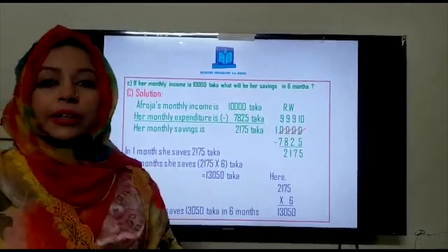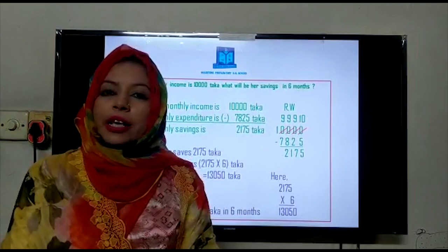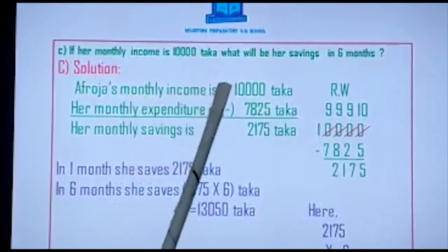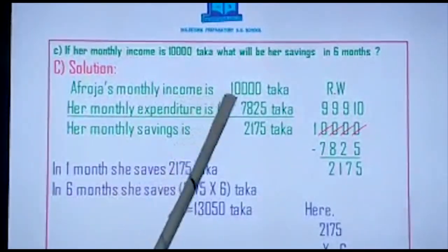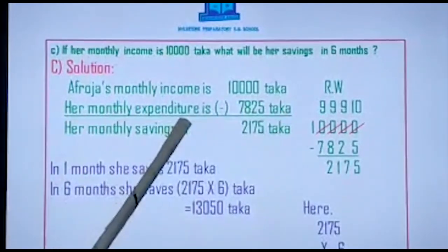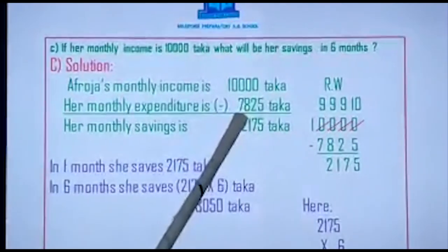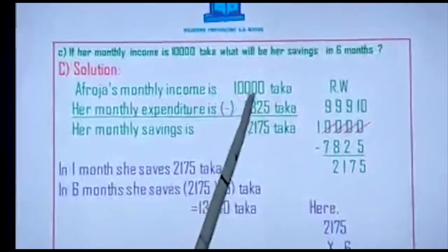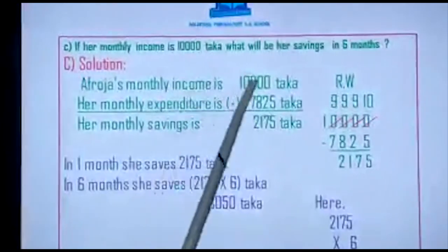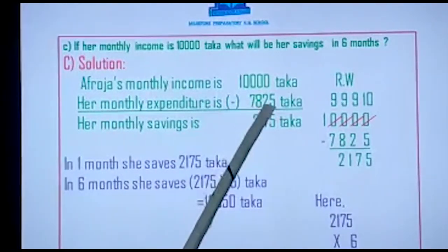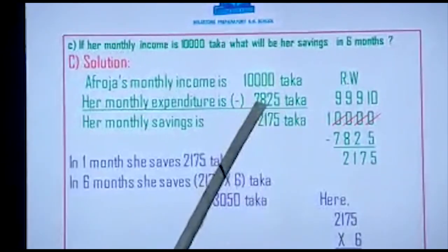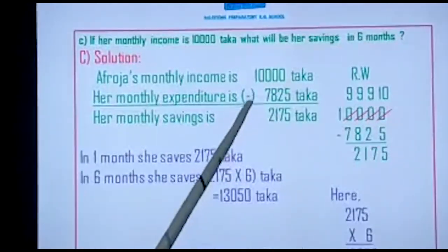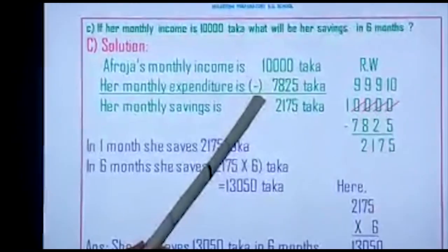I have written: Afroza's monthly income is ten thousand Taka. Her monthly expenditure — it will be the same, because there is no change in expenditure. Only the income has changed to ten thousand Taka. Expenditure remains seven thousand, eight hundred twenty-five Taka. So here we have to do subtraction, and I have put the subtraction sign.